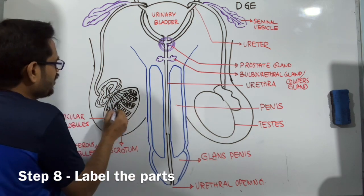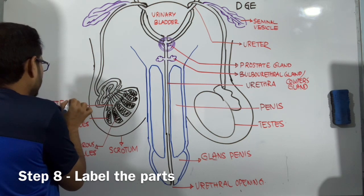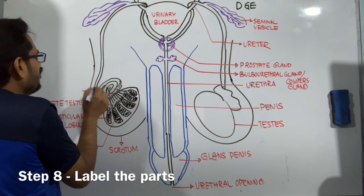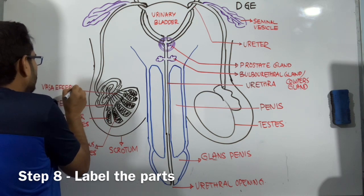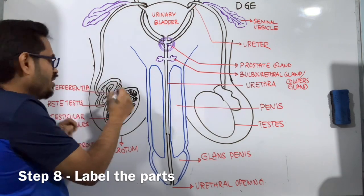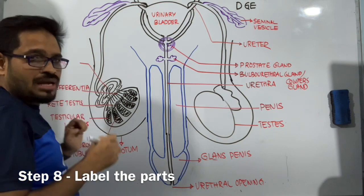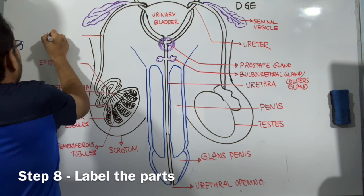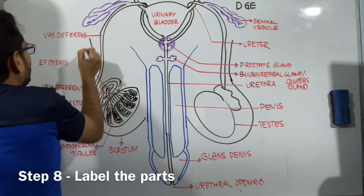All the seminiferous tubules open to this area called rete testis. Rete testis opens to various small tubes called vasa efferentia. Later on, vasa efferentia opens to a bag of worm-like structure called epididymis. And then the tube going all the way up is called vas deferens. That is the major parts in the drawing.